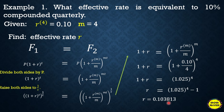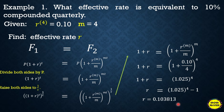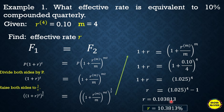The answer is r = 0.103813. We use 6 decimal places for precision when computing effective and equivalent rates. Converting to percent by multiplying by 100, the effective rate is 10.3813% — that is the effective rate equivalent to 10% compounded quarterly.